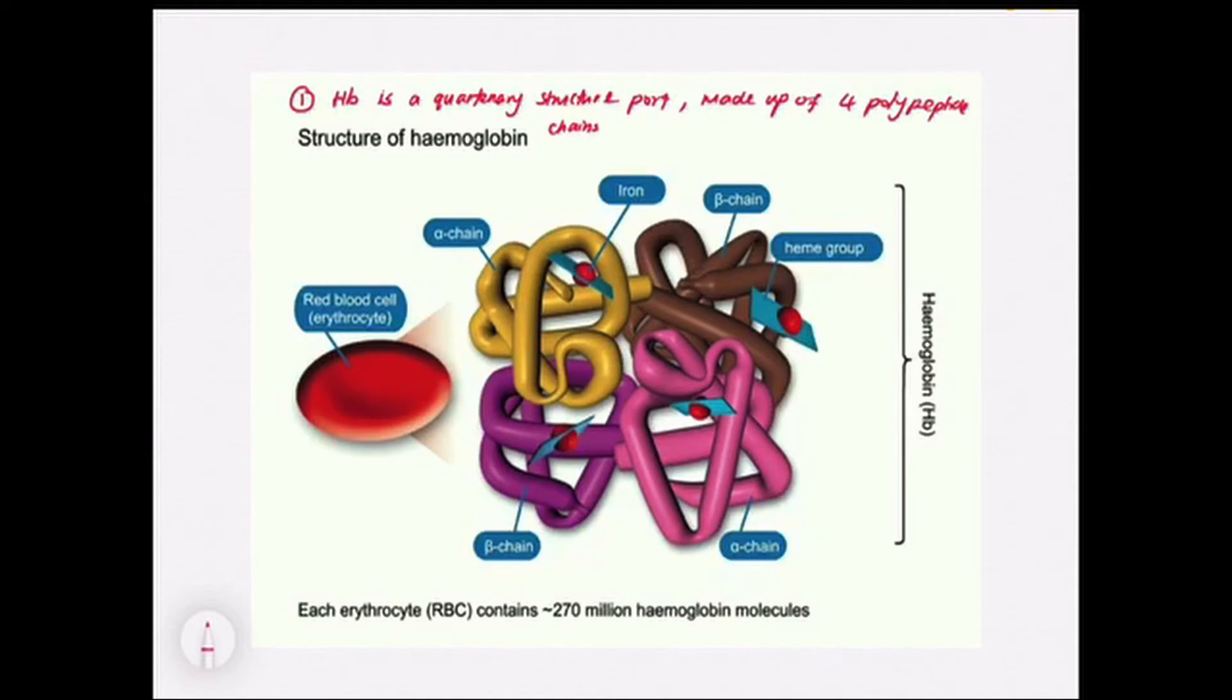Second thing, we have to identify the types of chains that are present. If you observe carefully, despite they show a different color, there's actually two alpha chains and two beta chains. You actually need only two types of genes to code for this globin. Number two, we see that they are made up of two alpha and two beta chains.